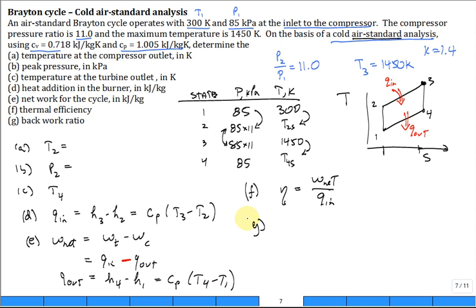And then G, the back work ratio. Well, here you need to get the work of the compressor and divide it by the work of the turbine.